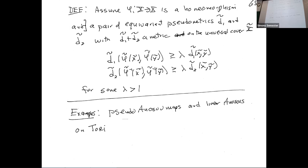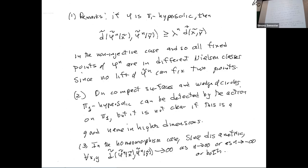You expand in one direction and contract in the other, or expand in backwards time. It's always the expansion that runs the engine, so you think of expansion in backwards time. This gives the hypothesis on the action in the cover. With this kind of expansion, all periodic points are in different Nielsen classes.